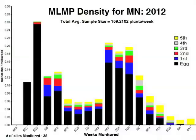Measuring monarch density is the heart of the MLMP. You'll look at many milkweed plants and keep track of the eggs and larvae that you see on these plants. The result will be a per-plant density of monarchs. We use this measurement to see how monarch densities vary within a year, between years, and among different sites and locations.